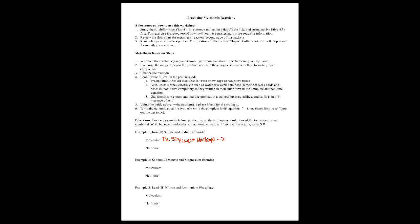Now we have to predict the products. Following our steps, we're going to exchange the partners. We're going to get FeCl2 — because Fe is 2+, it's FeCl2. And then we also get sodium sulfate, Na2SO4, because sulfate is 2-minus. Now we consult our solubility rules. FeCl2: all chlorides are soluble except the exceptions in the table, and iron is not an exception, so that's aqueous. Na2SO4 is also aqueous because sulfates are soluble and sodium sulfate is not one of the exceptions.